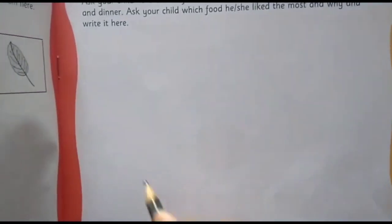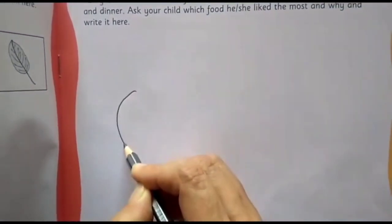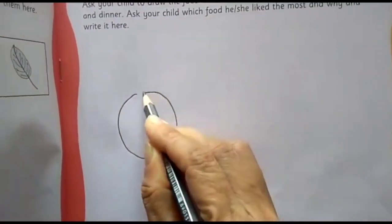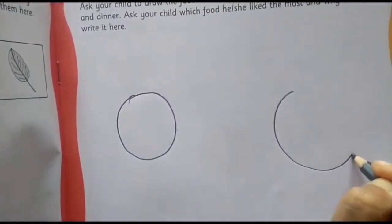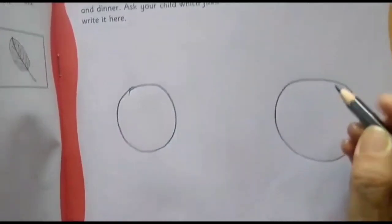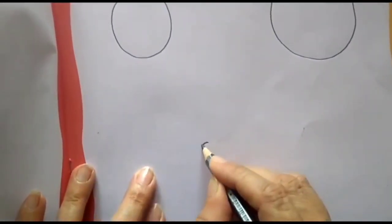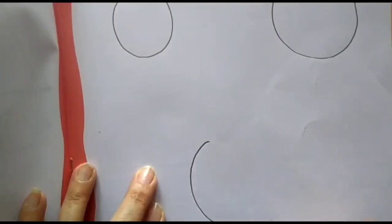So what you need to do? First, you need to make three circles. One for breakfast, one for lunch, little bigger than breakfast and one circle here for dinner.